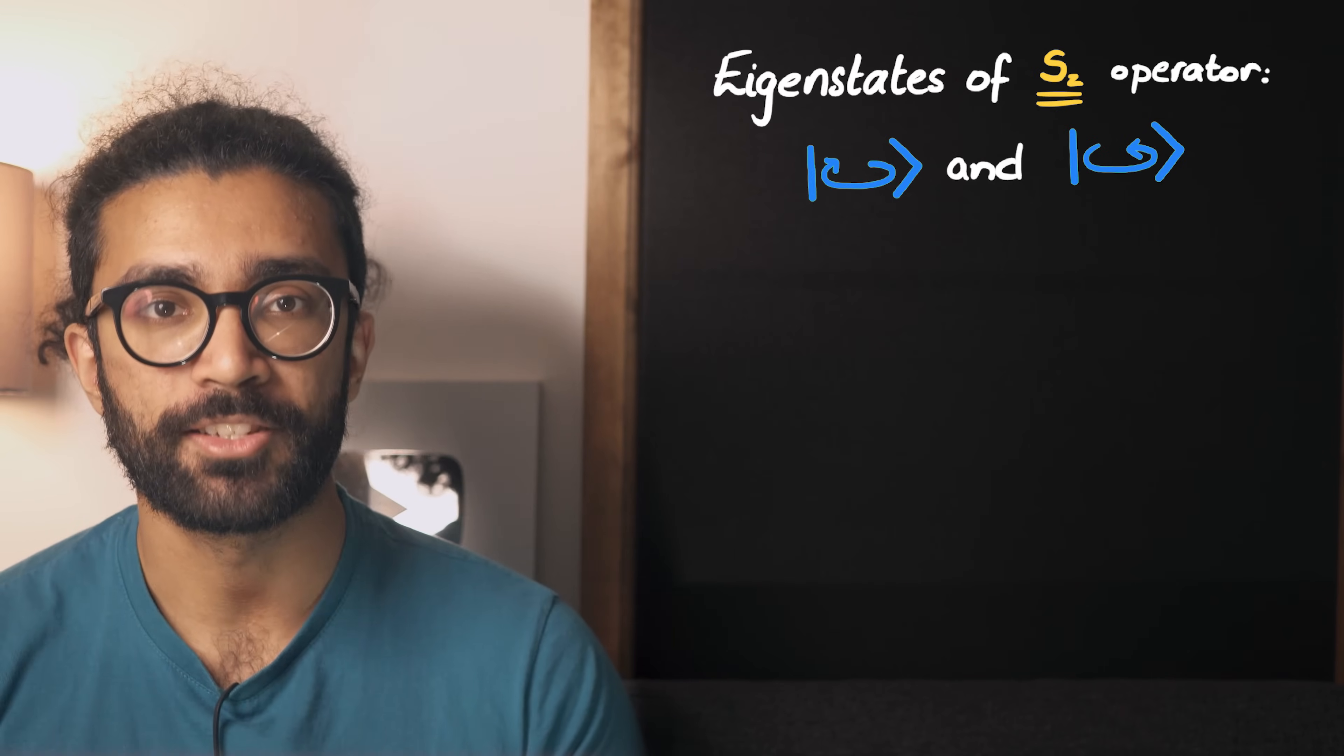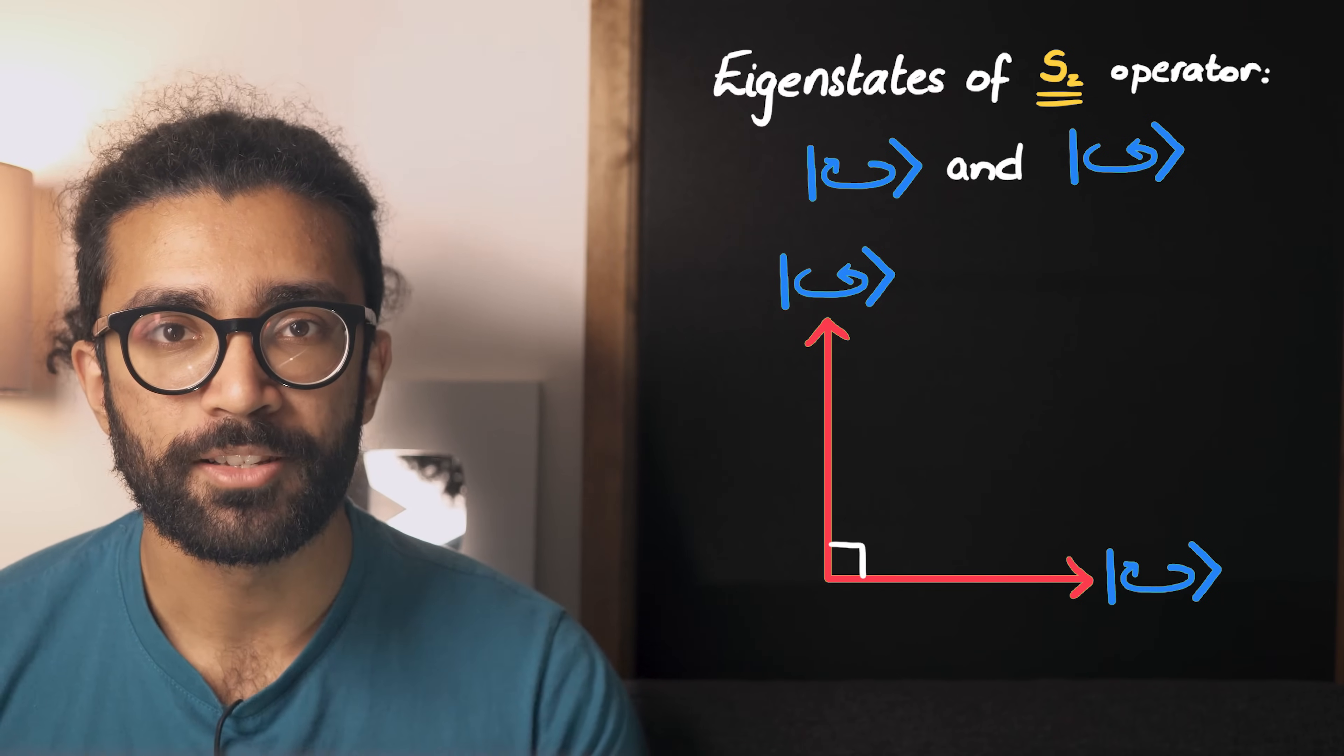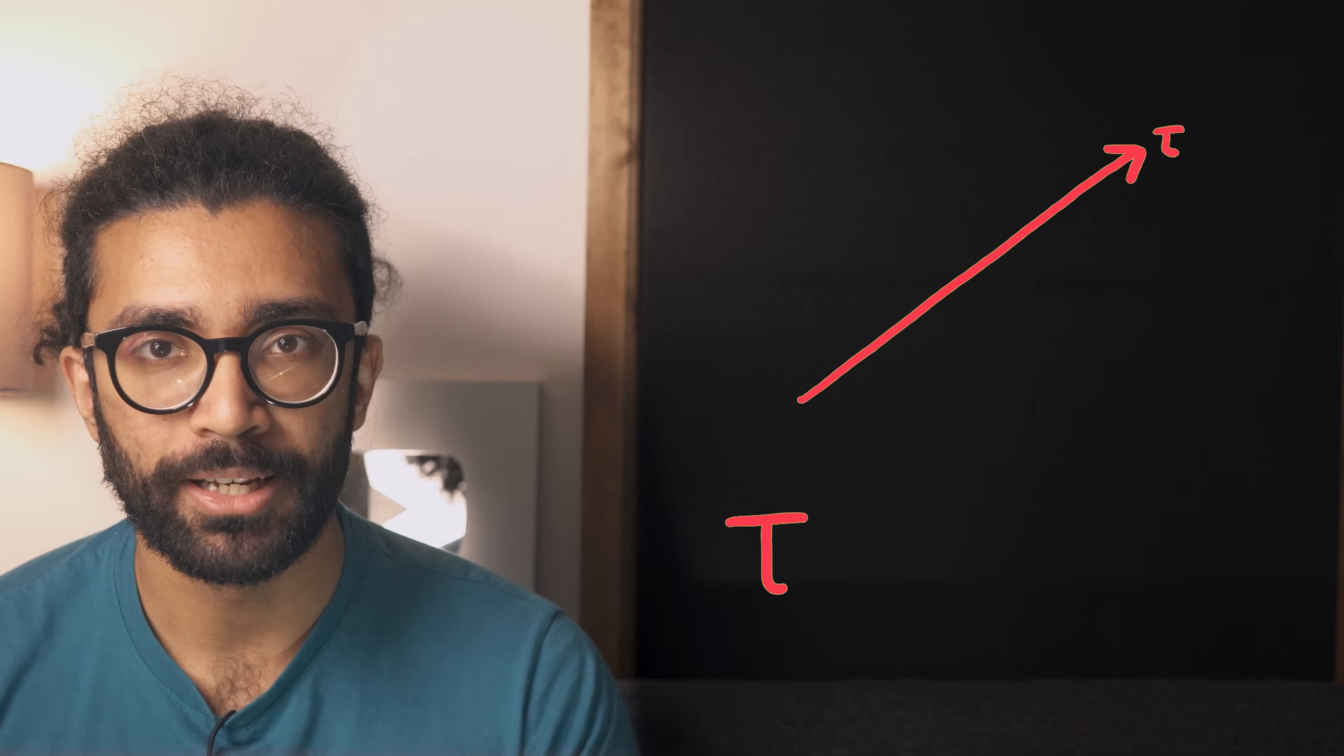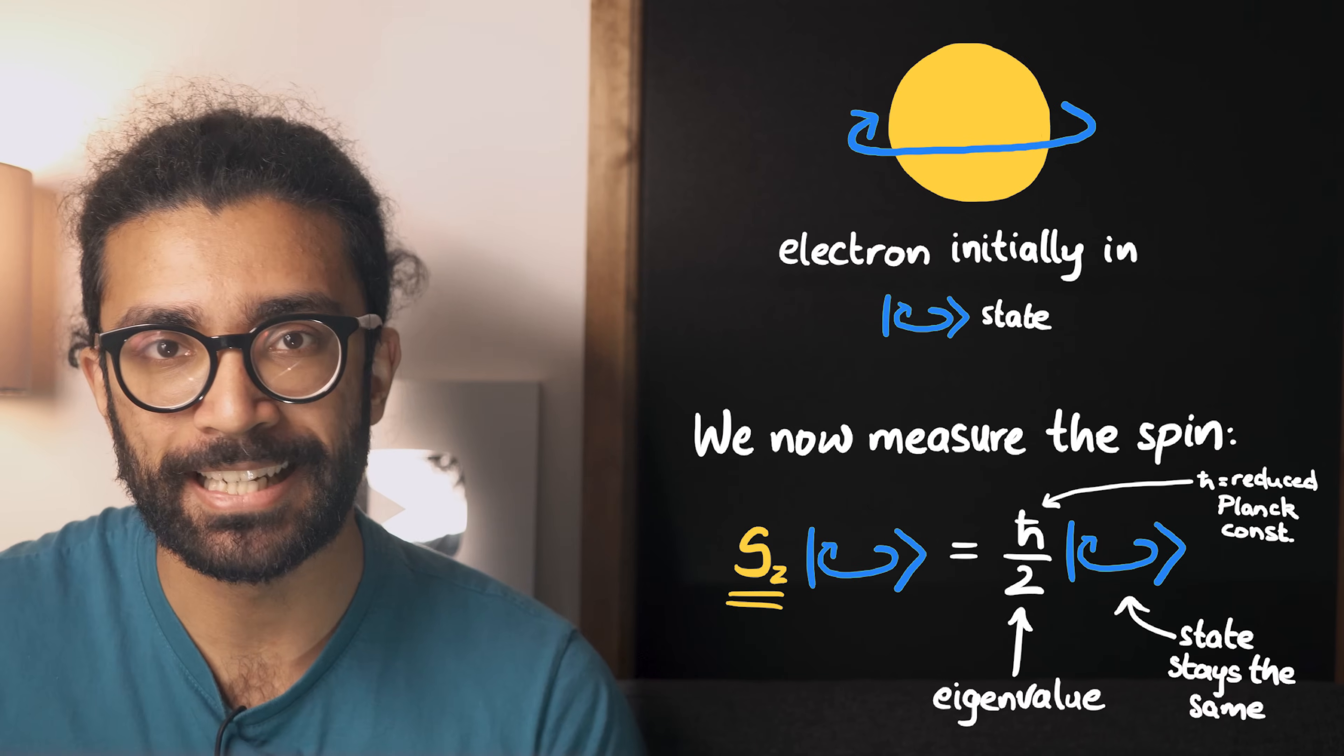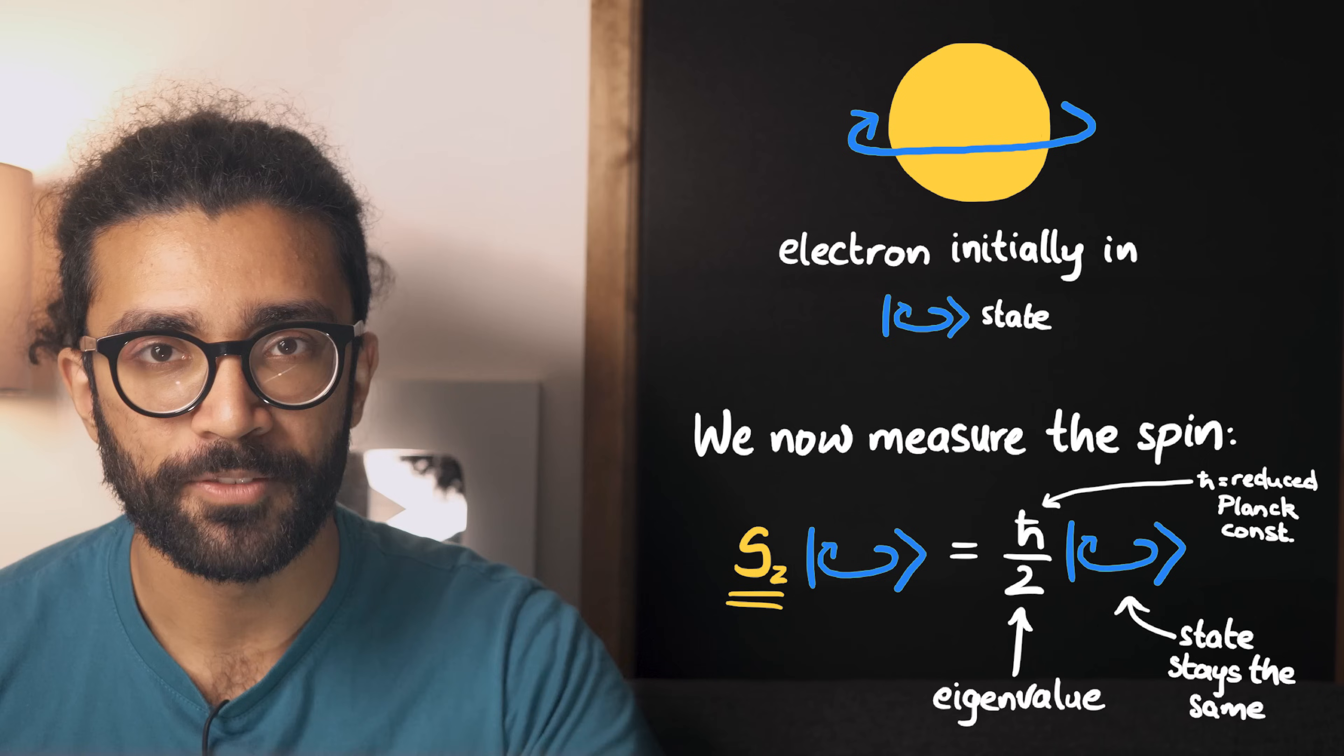It's also worth noting that eigenstates of any operator always behave like perpendicular vectors. There is no component of one vector in the other. In other words, there is no way to write one vector in terms of another. Whereas with a vector like this, we can write it as some combination of this vector plus some combination of this vector. So in many ways, making a measurement on a system that is already in an eigenstate is pretty intuitive. The system remains in the same state, and the numerical result we get because we made a measurement is the eigenvalue of the state.